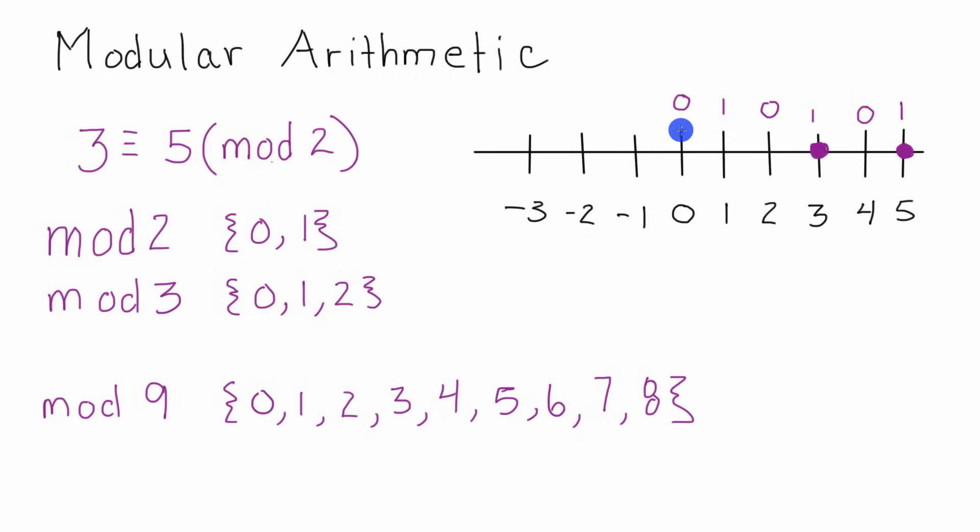We can also apply this to negative numbers as well. So following this pattern, negative 1 would have the value of 1 in mod 2, negative 2 would have the value of 0 in mod 2, and negative 3 has the value of 1 in mod 2. So in mod 2, negative 3 is congruent to positive 3, and negative 3 is congruent to 5, because both negative 3, 3, and 5 correspond to the number 1 when we're dealing in mod 2.